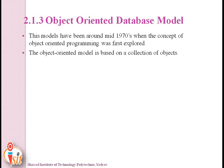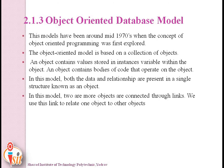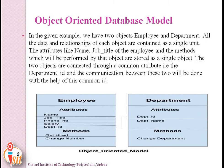The object-oriented database model emerged around the mid-1970s when the concept of object-oriented programming was first explored. This model is based on a collection of objects. In this model, two or more objects are connected through links, and we use these links to relate objects to each other.